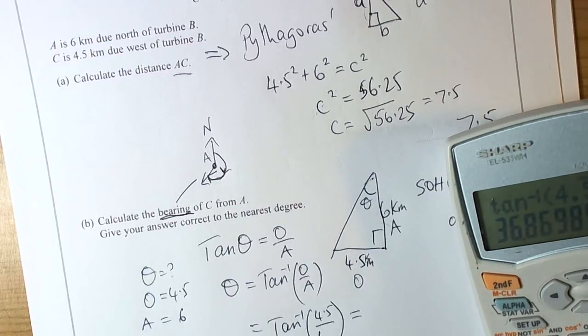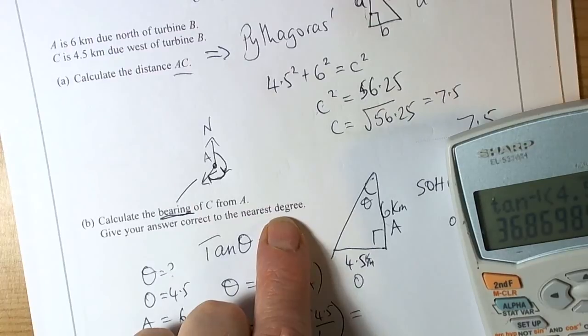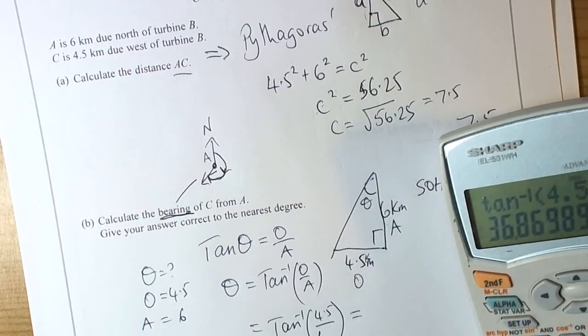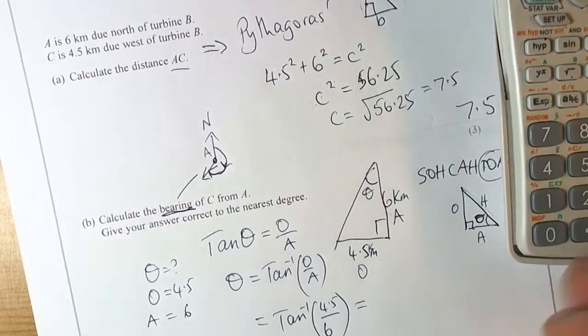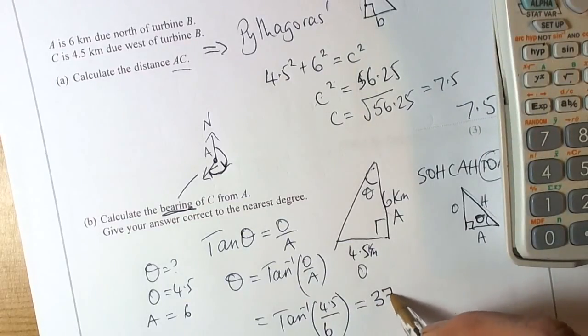This gives us an angle of tan to the minus 1, bracket 4.5 divided by 6, close bracket equals. To one decimal place, three significant figures - because it says give the answer to the nearest degree, we will round this to 37 degrees. To the nearest degree we will make it 37 degrees.